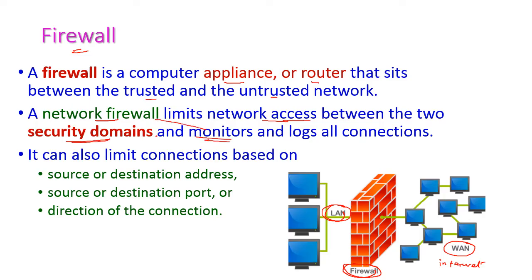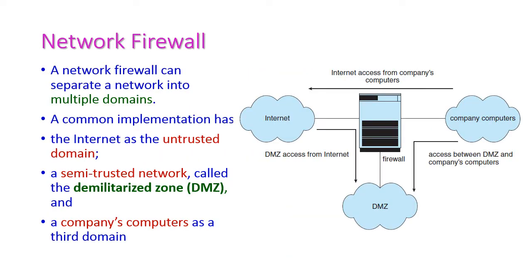The firewall monitors and logs all the connections — logs means it records them — and it can limit connections based on the source or destination address, the source or destination port, or the direction of the connection. Based on these things, the firewall limits the connections. This network firewall lies between the company's computers and other networks, so the company's computers connect to the internet or other domains only through this firewall.